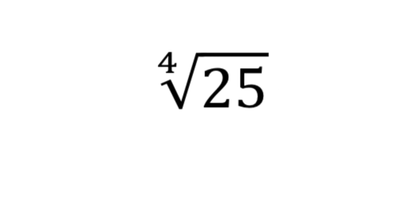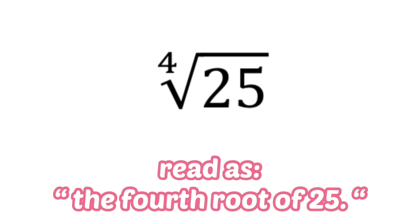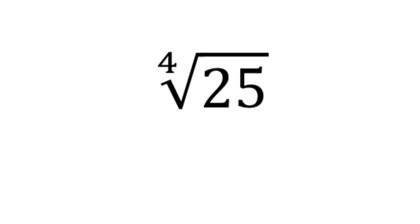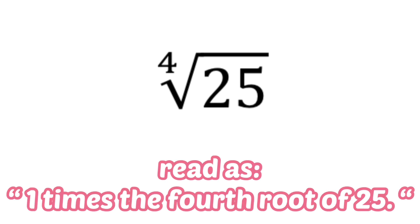In this next example, we read this as the fourth root of 25. If you notice, there is no coefficient. Remember that if there's no coefficient in front of the radical expression, that invisible coefficient is 1. So we can go ahead and read this as 1 times the fourth root of 25.